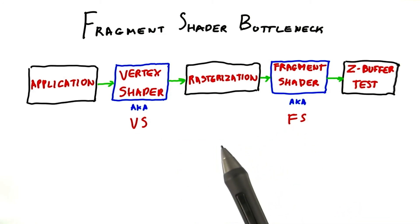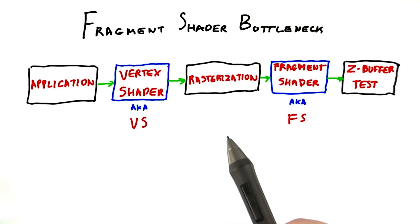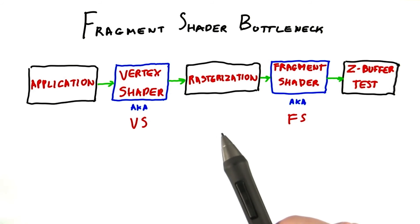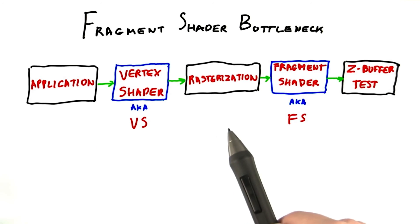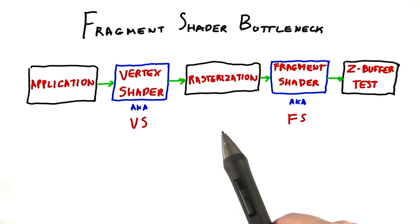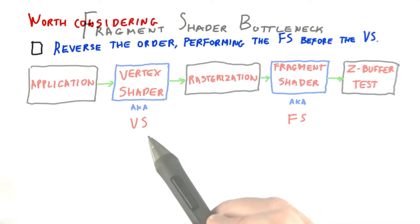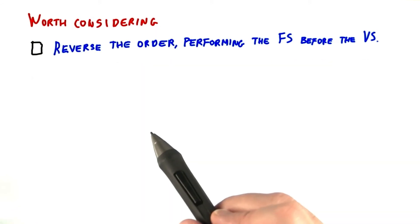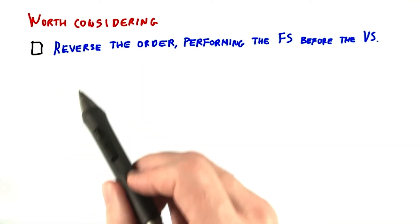You've been hired to design their next chip, which will have many more transistors available. Your team brainstorms a few architectural ideas and you're asked to evaluate these. Your task is to decide what's worth considering.